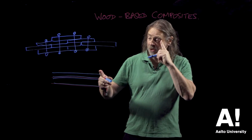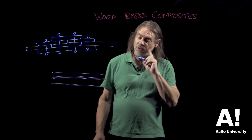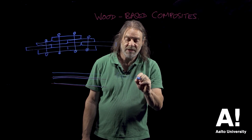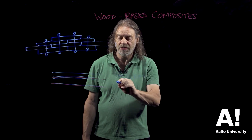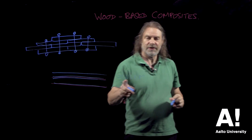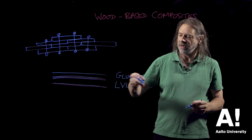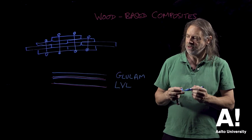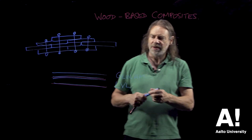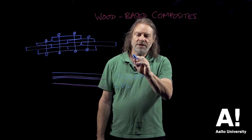Typically, bonded structures where we have long pieces of wood glued together would be called glue lam, for glue laminated structure, or laminated veneer lumber — LVL — in which case we use wood veneers and glue those together. Glue lam is where we get pieces of wood and glue those together to make long structures like this.